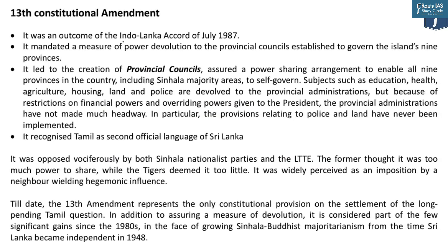The most important incident in which India had a role is the Indo-Lanka Accord of July 1987. India was getting weary of the civil war in its neighborhood — there was a threat of huge refugee influx, the issue of Tamil-speaking population with roots in India, risk of insurgency in India, and the need to address human rights violations. So the Rajiv Gandhi government decided for direct intervention by sending military to Sri Lanka. Because of India's pressure, Sri Lanka entered the Indo-Sri Lanka Accord, and the most important outcome was the 13th Constitutional Amendment — which mandated a measure of power devolution to provincial councils established to govern the island's nine provinces.